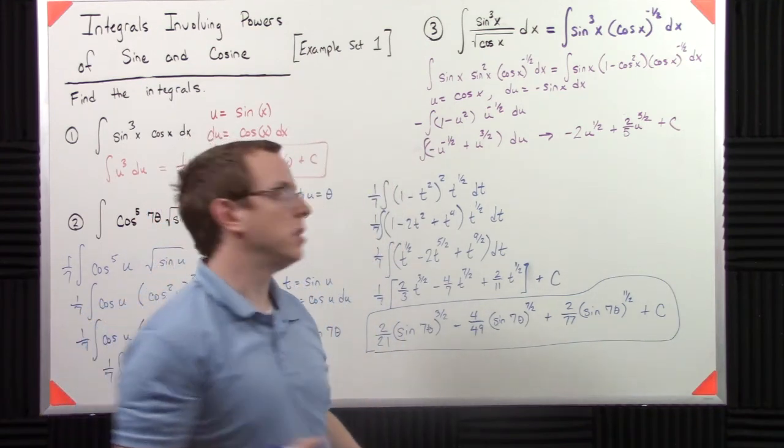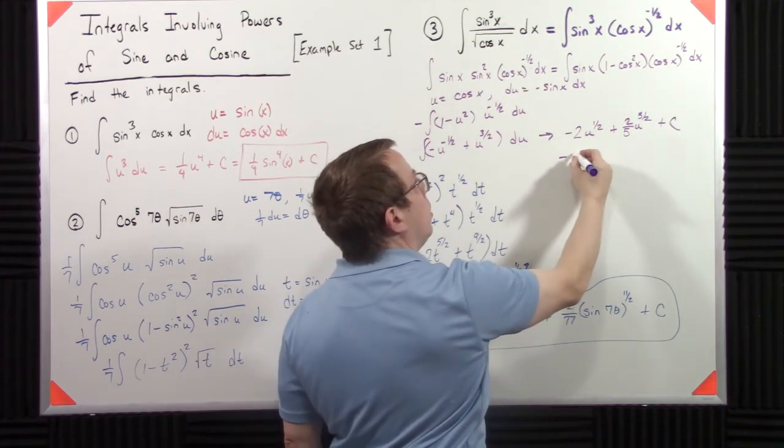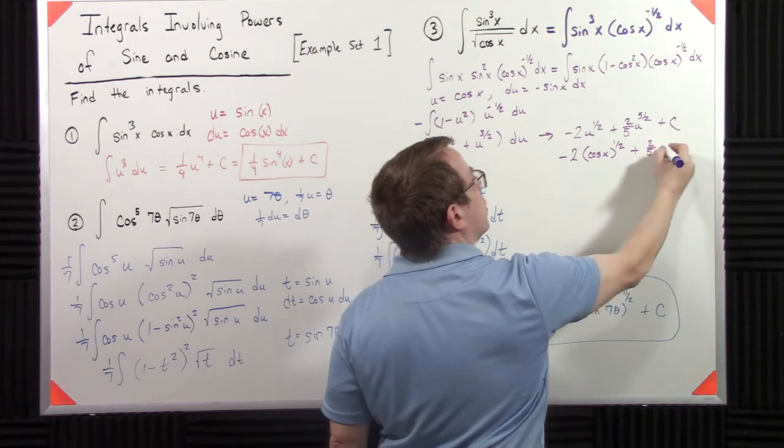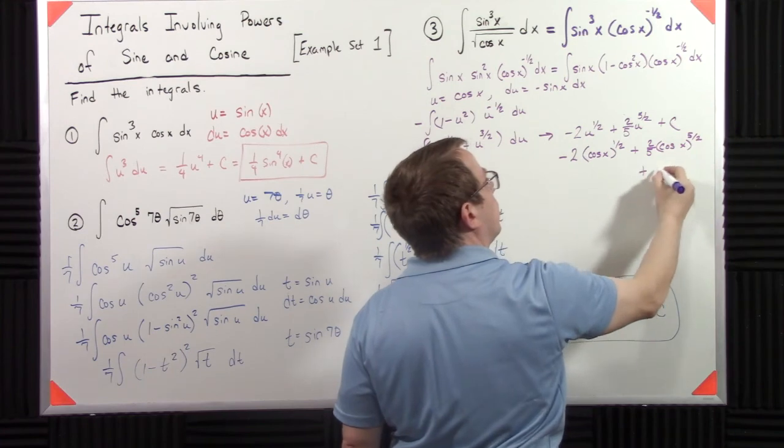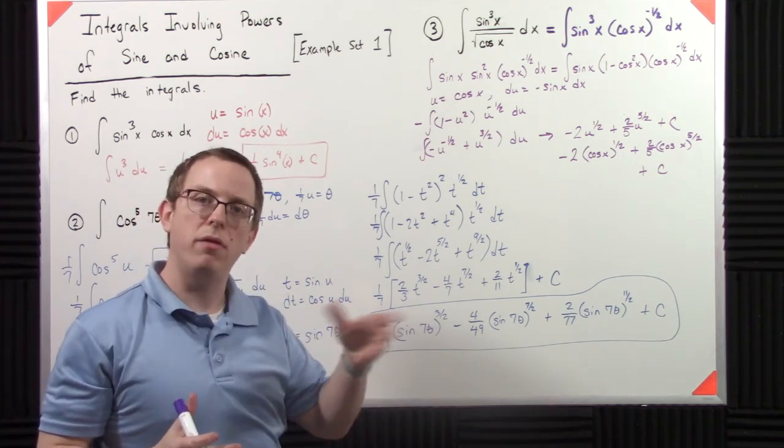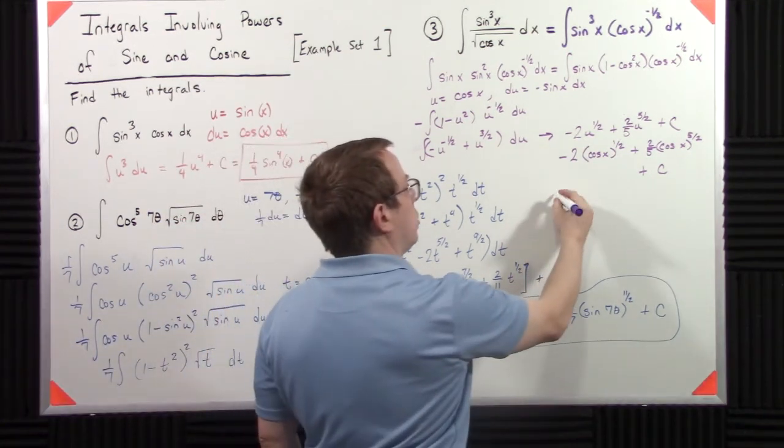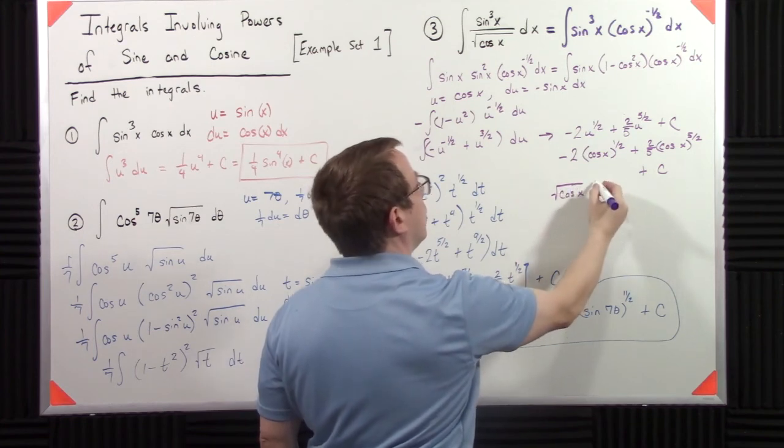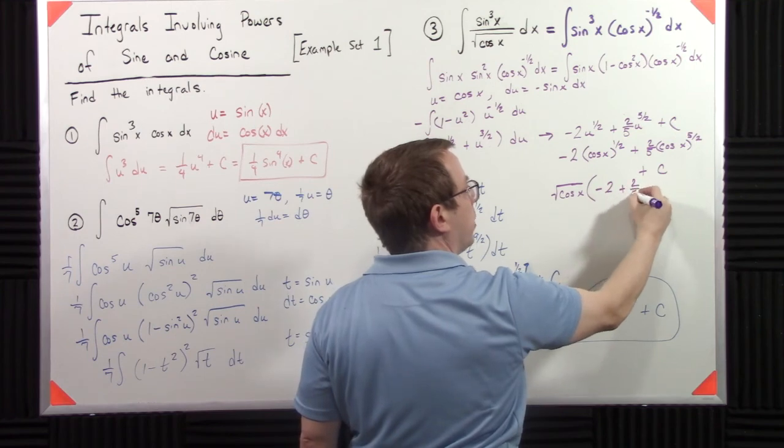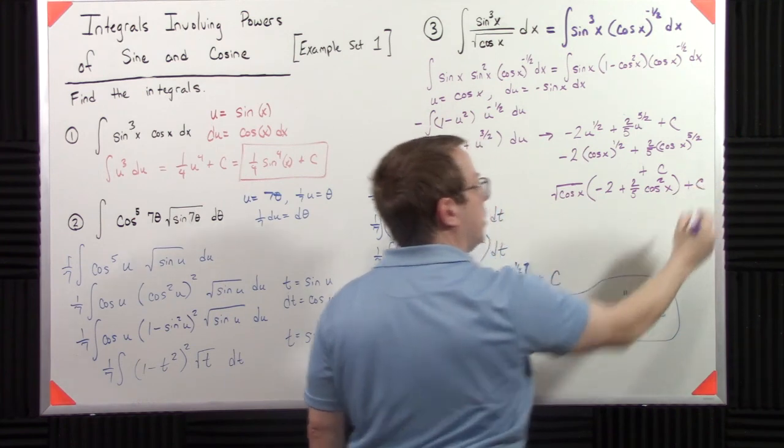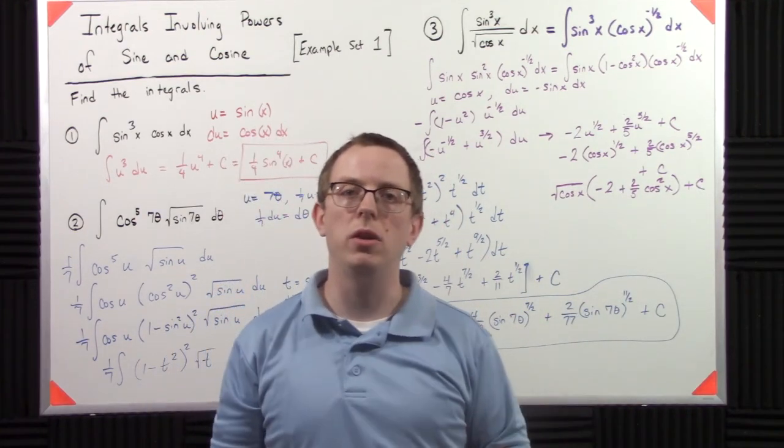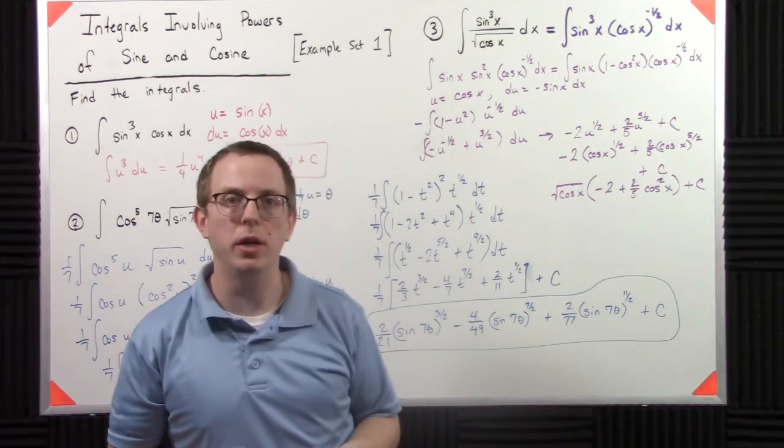But again, we didn't start in u's. We started in x's. So, two cosine of x to the one-half plus two-fifths cosine of x to the five-halves plus c. So, another way to write this is if I pull out a one, like cosine of x to the one-half is the square root of cosine x. So, another way you might see this written is something like this: square root of cosine x. So, I have negative two and then I have two-fifths cosine squared x. So, that's because that's a one-half power. That's a two. Two and a half is five-halves. So, you see that. That way, it's kind of a little more in terms of standard things. We don't typically like arbitrary powers if we can help it. But sometimes there's no way around it.